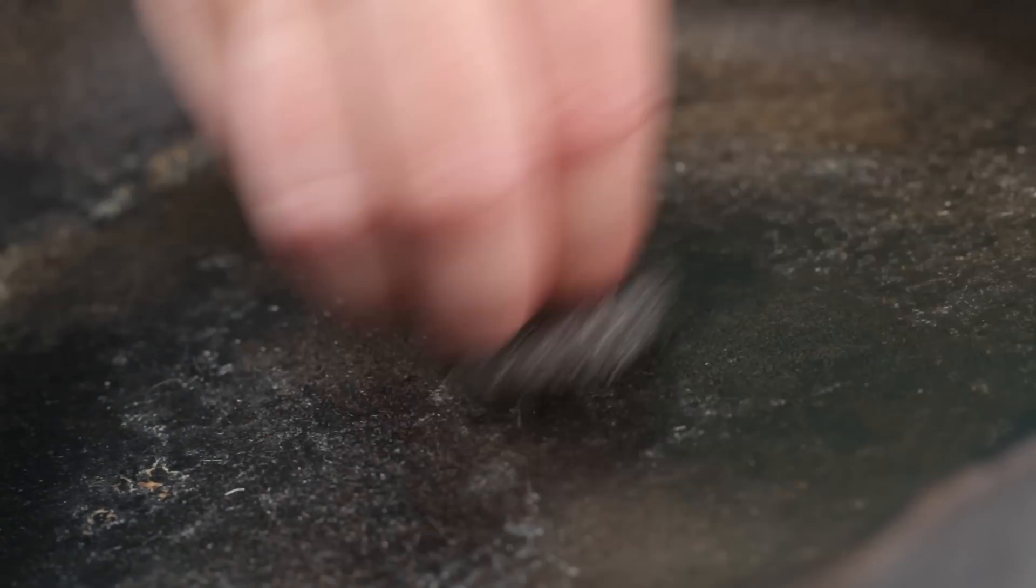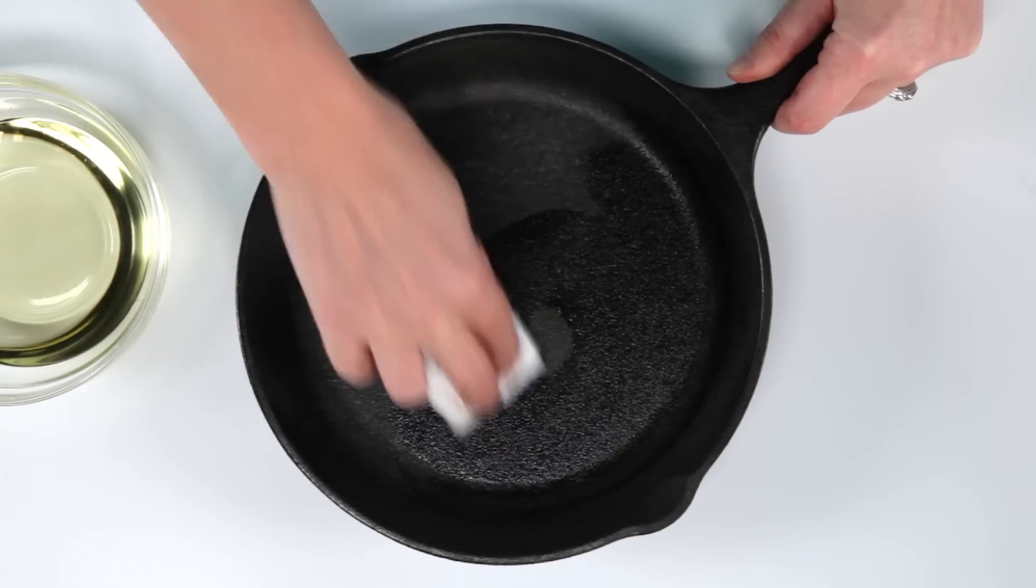If your pan has rust, use steel wool or fine-grade sandpaper to scrape the rust off, then proceed with the seasoning process.